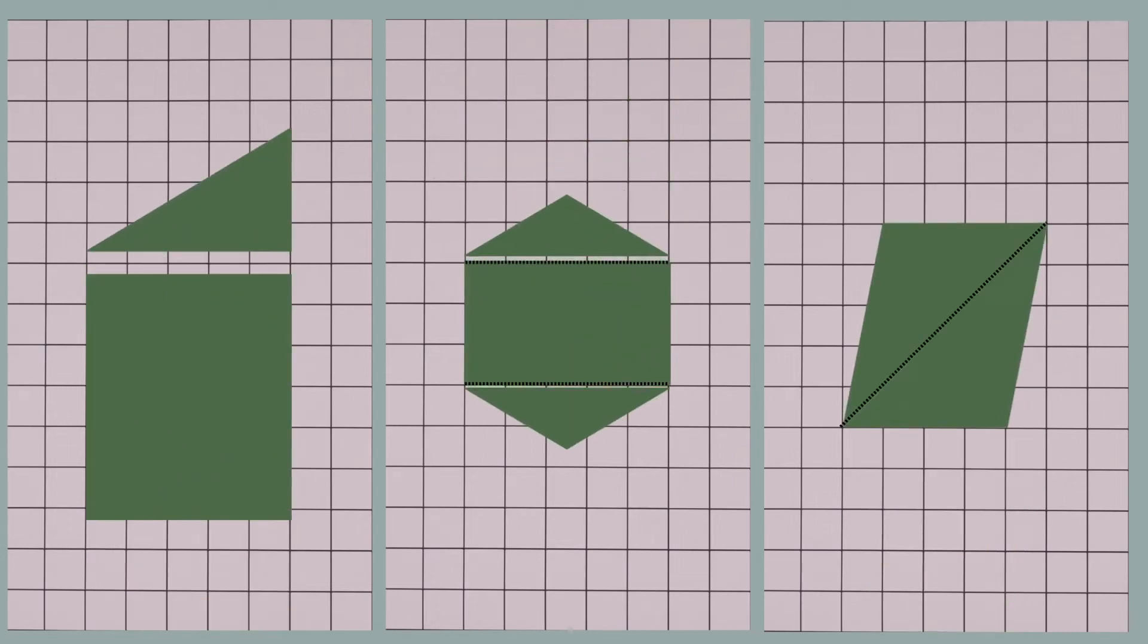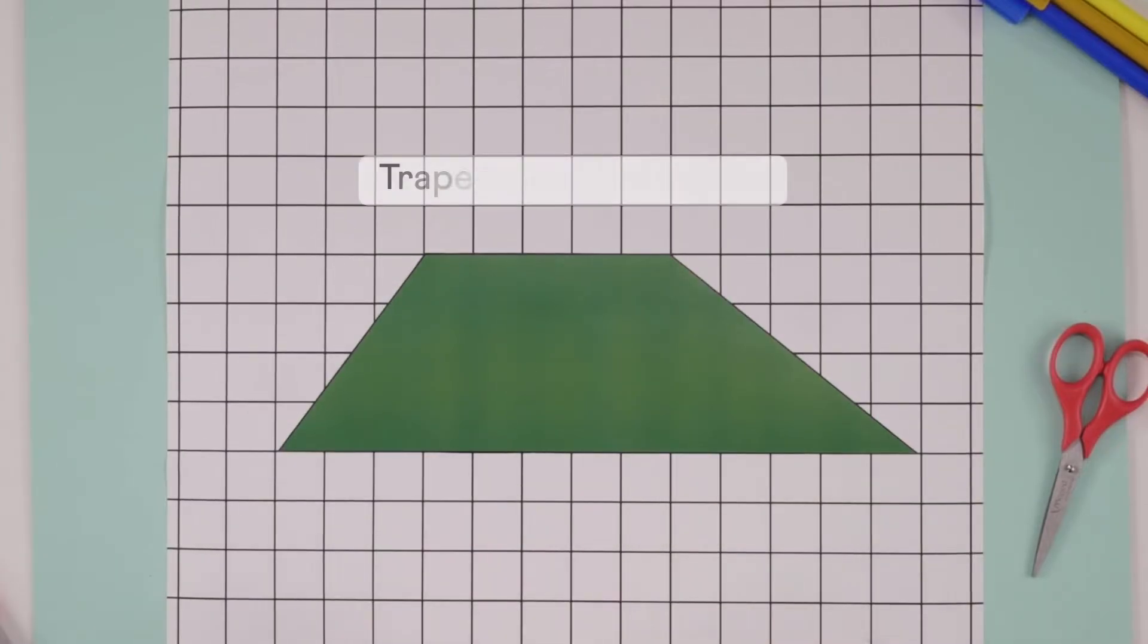Dividing into triangles or rectangles can help us find areas of many shapes, like this one. This is called a trapezoid or trapezium, whose one pair of opposite sides are parallel.